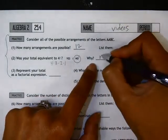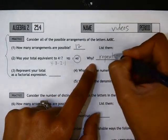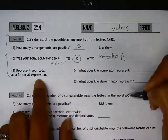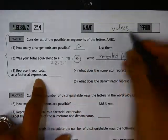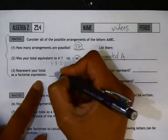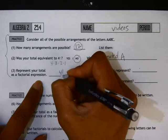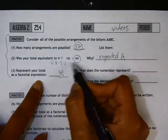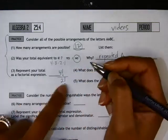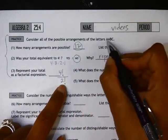The reason for that is that one of the elements, A, is repeated. So if we were to try to represent this total of 12 as a factorial, we could start with 4 factorial, but we need to divide by 2 factorial because of the two repeated A's that you have in the original problem.